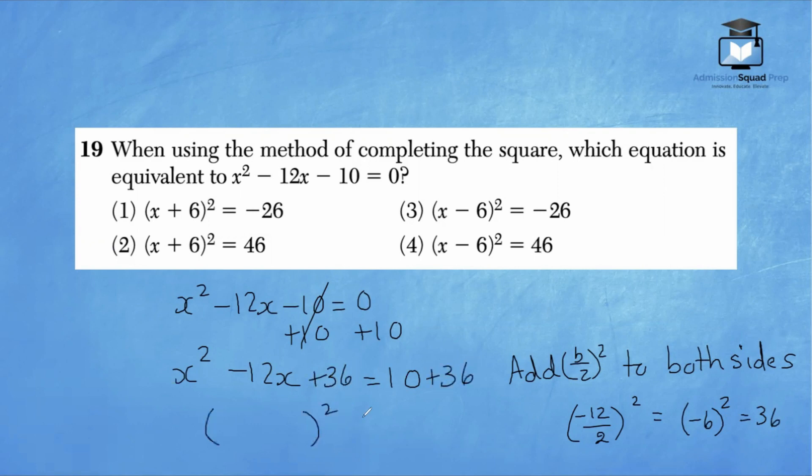Now we're going to rewrite this left-hand side as a perfect square. So we'll have x minus 6 squared on the left, and we'll have 46 on the right. The beautiful thing about question number 19 is they don't really want you to solve the entire problem. They just want you to get to the step of expressing the trinomial as a perfect square. So we can tell that the correct answer is choice 4.